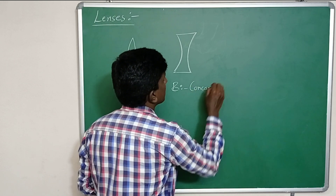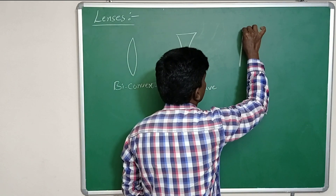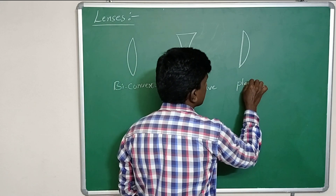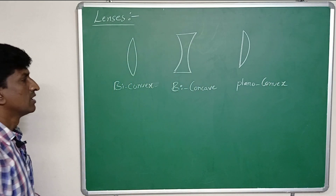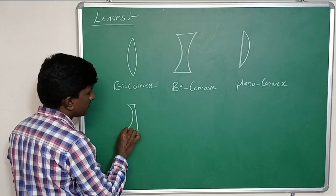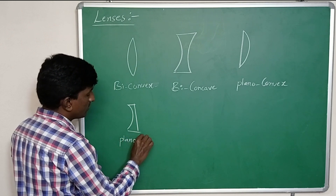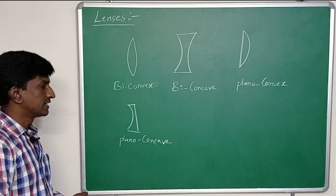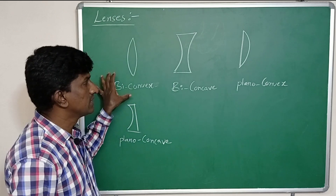The lens may have one plane surface and one convex surface — then this lens is plano-convex. Or the lens may have a concave and a plane surface — then it is a plano-concave lens. So in this way, at least one curved surface is there, and if it is transparent, this type of object is said to be a lens.